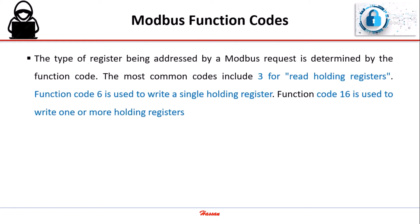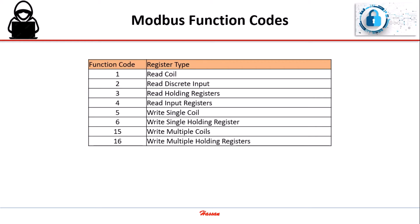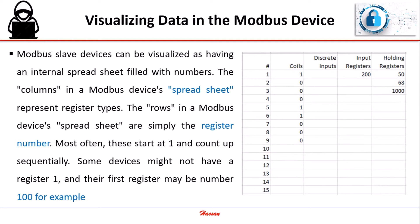The type of register being addressed by a Modbus request is determined by the function code. The most common codes include function code 3 for read holding registers. Function code 6 is used to write a single holding register. Function code 16 is used to write one or more holding registers. Modbus slave devices can be visualized as having an internal spreadsheet filled with numbers. The columns represent register types, and the rows are simply the register number, most often starting at 1 and counting up sequentially. Some devices might not have a register 1, and their first register may be number 100, for example.